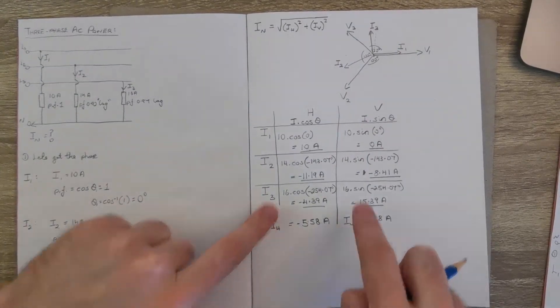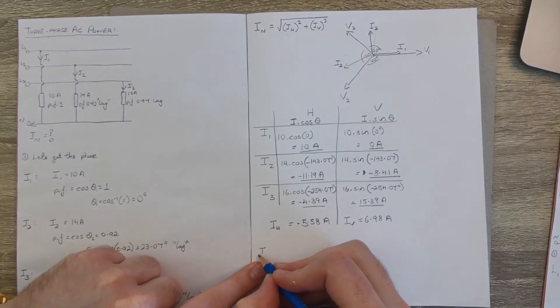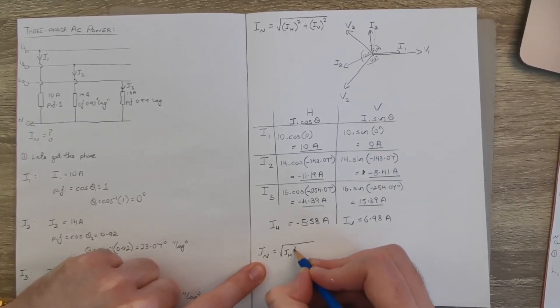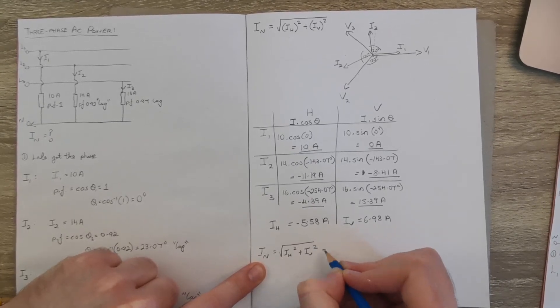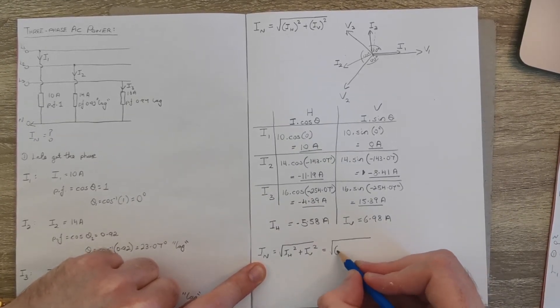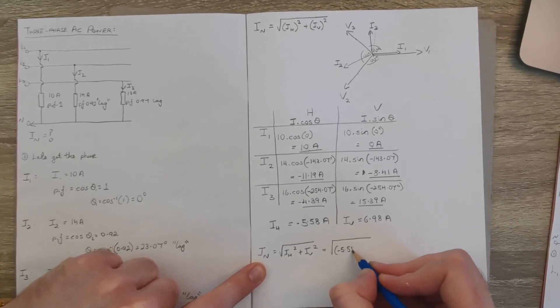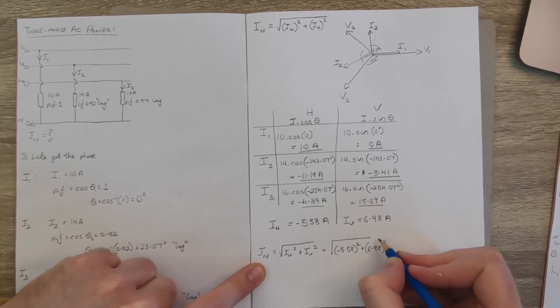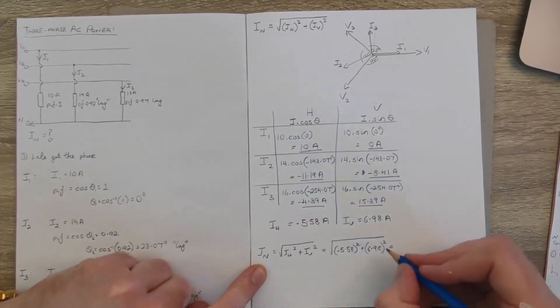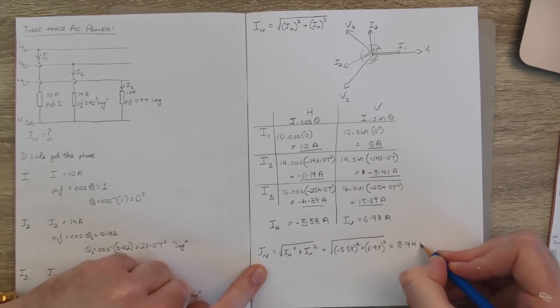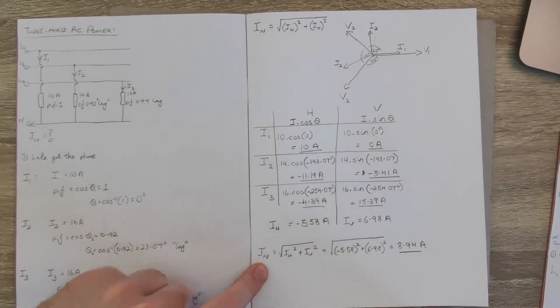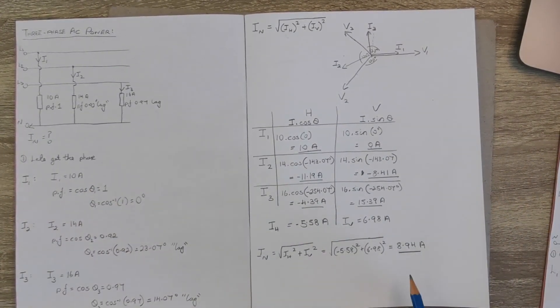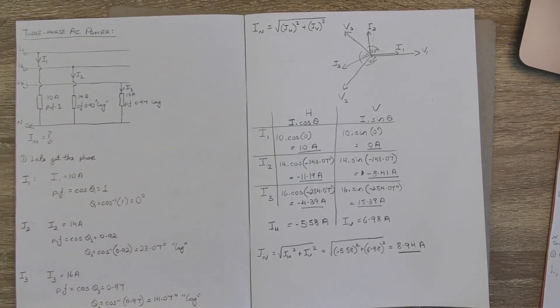And then we pass these back into this formula. IN will be equal to IH squared plus IV squared. We get minus 5.58 squared plus 6.98 squared, and get the square root of all of that, and it works out at 8.94 amps. So as the question was looking for the magnitude of IN, it's this value here.